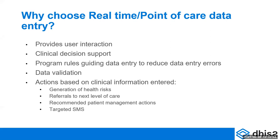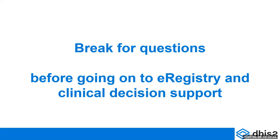And if you're doing secondary data entry, by the time this information gets to you, the person is gone — the client who was supposed to get this information is gone. So that's one of the reasons why we would have real time point of care data. You can also have SMSs that the client needs to get during the visit, but usually that is not that common. It usually is about health risk referrals and recommended patient management actions. So let's take a break for questions before I go on to the e-registry and the clinical decision supports.